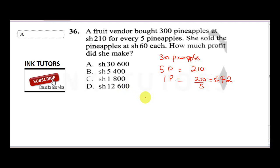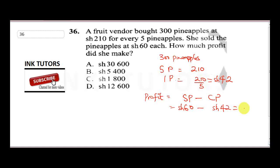To get the profit, you need: selling price minus cost price. Her selling price was 60 shillings and her cost price was 42 shillings, so 60 minus 42 gives us 18 shillings. That is her profit per pineapple.